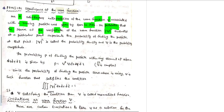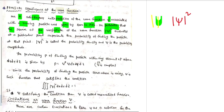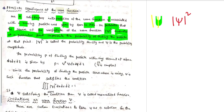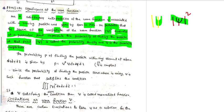what is the wave function? This is the square — the magnitude of the wave function. It is evaluated at a particular point that represents the probability of finding the particle at that point. Modulus of ψ² is also called as the probability density and ψ is called as the probability amplitude.